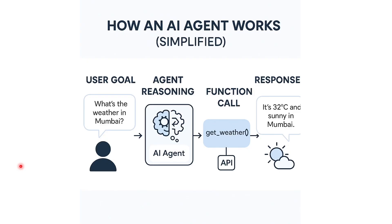Before we jump into the code, let me explain with an example. Think of an agent as a smart assistant that can use tools — tools meaning functions. It can be a user-defined function or perform actions to answer your questions. A normal ChatGPT can tell you what the weather usually is, but an agent can actually call a weather function, fetch live data, and give you the real answer. Agents are not just chatbots — they are reasoning systems that can take actions.